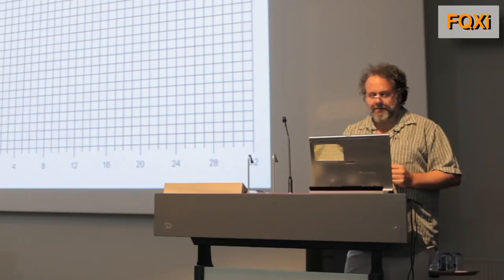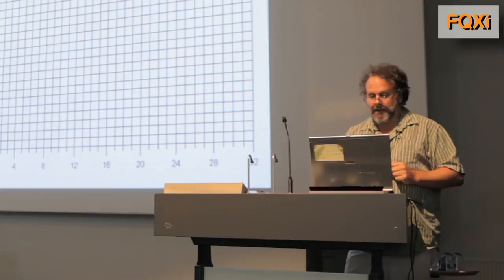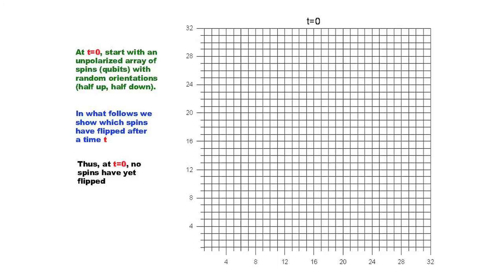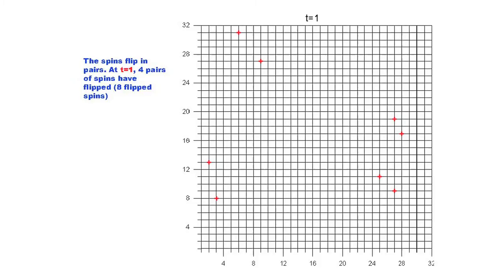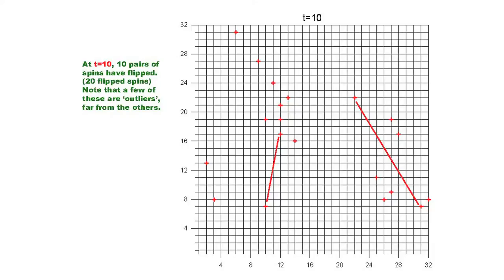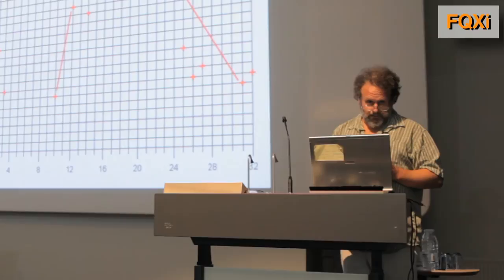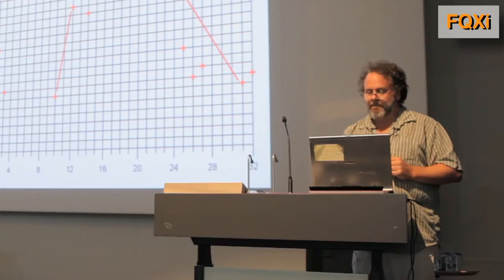I'm going to show you what happens. This is a set of a thousand of these on a square lattice, and remember the interactions are long range. At t equals zero, I'm going to show you the spins that have actually flipped after a time. At t equals one, there are eight of them that have flipped. At t equals ten, ten pairs — that is twenty spins — have flipped. But it turns out that two of these pairs have interacted over long ranges, because of this long-range dipolar interaction.